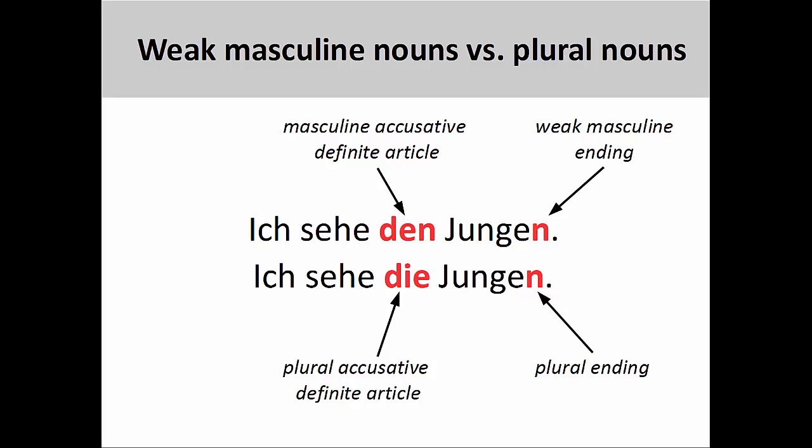So why is this important? Sometimes if we don't pay close attention to clues that German sentences provide us, we may misinterpret what we are reading. For example, in the sentence you see at the top of the screen, the definite article den indicates a masculine singular noun in the accusative case, and the -en ending indicates a weak masculine noun. However, in the sentence below this, the definite article den indicates a plural noun in the accusative case. The -en ending here indicates a plural noun — ich sehe die Jungen — I see the boys.